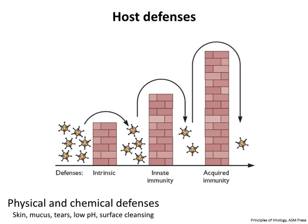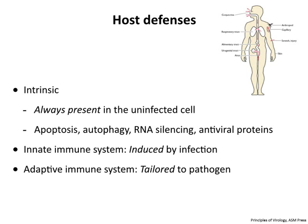The first obstacle is the intrinsic defenses, which we will talk about today in some detail. If intrinsic defenses do not stop virus replication, then it encounters innate immunity. If that doesn't stop the infection, we have the barrier of acquired immunity. And if the virus gets over that, you have a viral illness — hopefully you will recover, but not always.